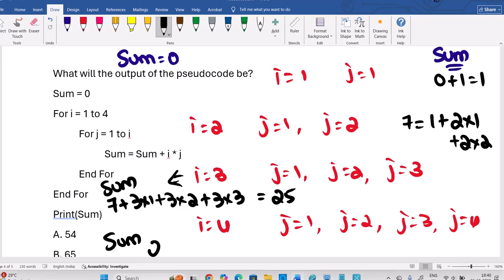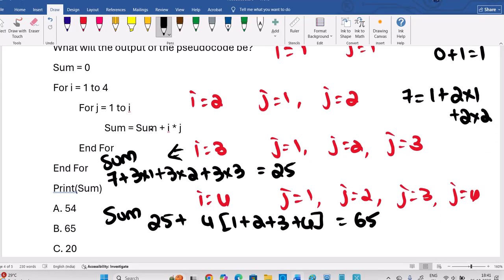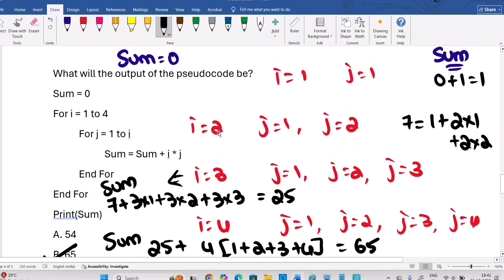Okay? Now, when you go for I value 4, already 25 available. Next, 4 into 1, 4 into 2, 4 into 3, 4 into 4. Likewise, it will come. Right? So 40 plus 25, 65 will be the result. So finally, 65 will be saved. Okay? So B is the answer, 65.